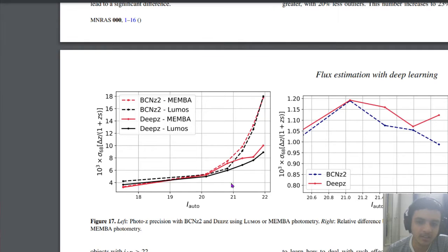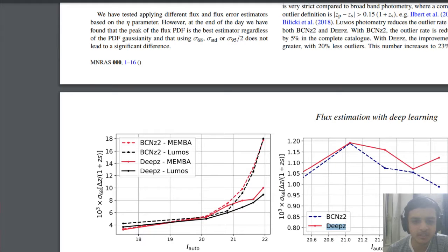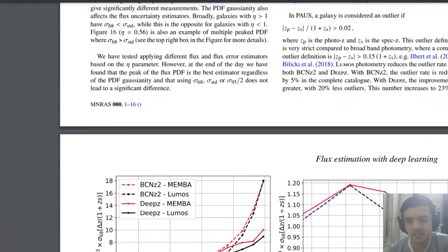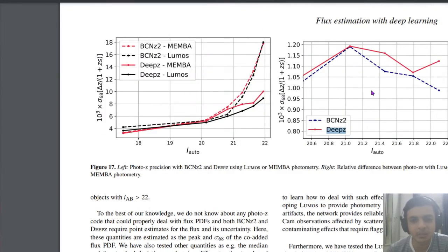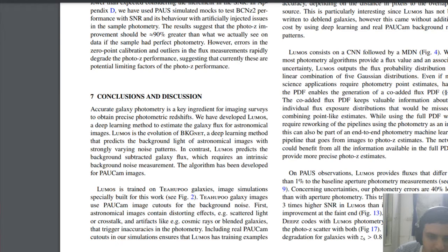Finally what they have is, when they trained a few networks, there's BCNz2 and DeepZ, two networks that they trained. In that they have obtained these graphs. This graph is the photo-z precision which is a very parametric score. In layman's terms, it shows that there is a bit of improvement with the Lumos. If you see the Lumos is the deep learning algorithm and if you see this black line, the precision is a bit better using the deep learning technique.